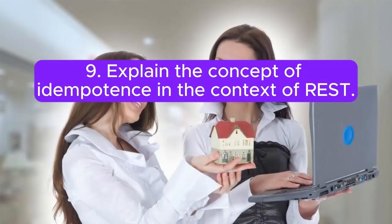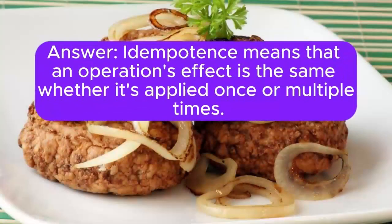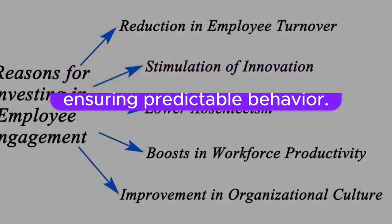Question 9: Explain the concept of idempotence in the context of REST. Idempotence means that an operation's effect is the same whether it's applied once or multiple times. In REST, operations like GET and PUT are inherently idempotent, ensuring predictable behavior.